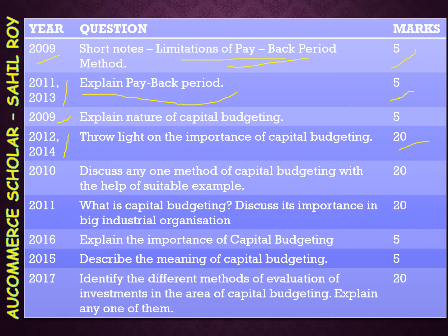Yeh business ke hisaab se alag-alag hota hai. Alag-alag business mein 20 months ke liye poocha gaya. Question hai: 'Throw lights on the importance of capital budgeting.' Importance of capital budgeting mein: pehla ideal investment hona chahiye, phir proper profit forecasting honi chahiye, saath hi analysis of risk and uncertainty, cost control yaani cost of production ko control karna, aur ranking priorities — budgeting ki madad se hum apni priorities rank kar sakte hain ki jo business zyada profitable hoga woh hamari pehli priority hogi. Agla point hai fund arrangement.